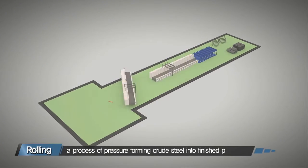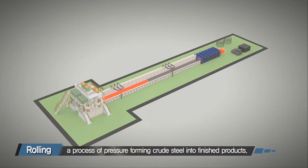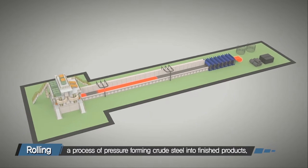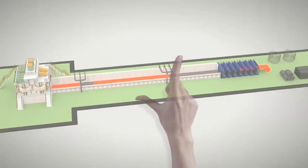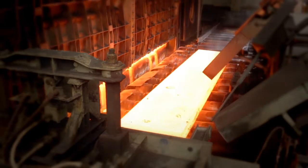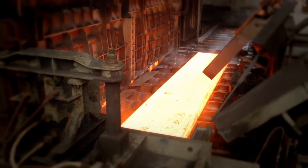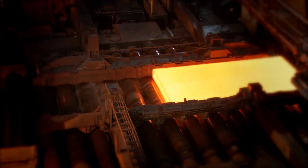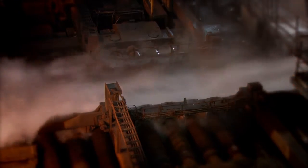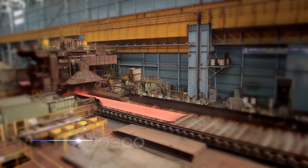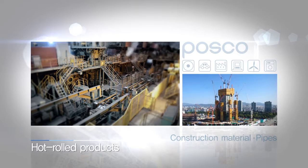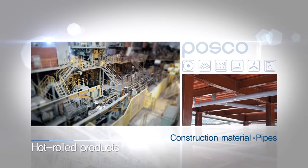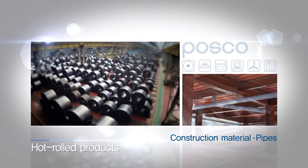The final stage of producing steel is the continuous casting process where steel is forged into various steel products. When a slab is heated above 1,100 degrees Celsius and passed between rollers, it turns into a thin and long steel sheet. This hot rolled product is used widely as construction materials and pipes in various industries.